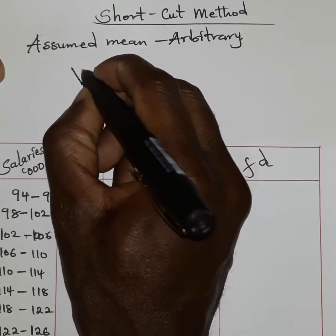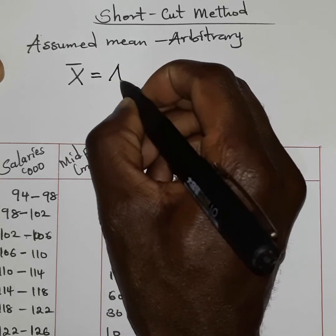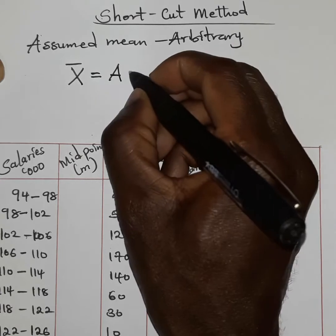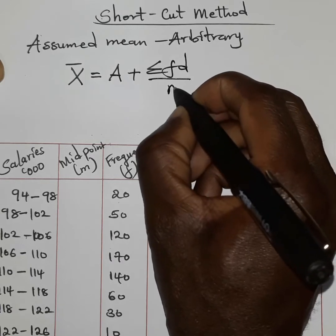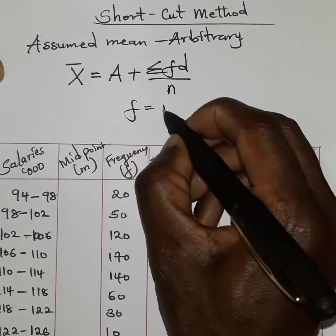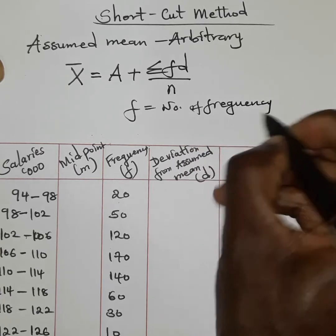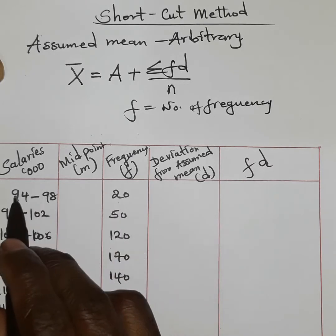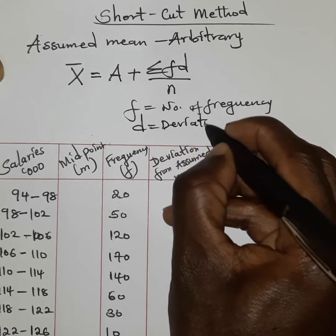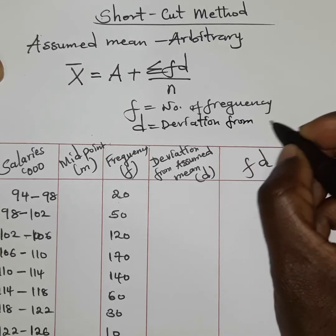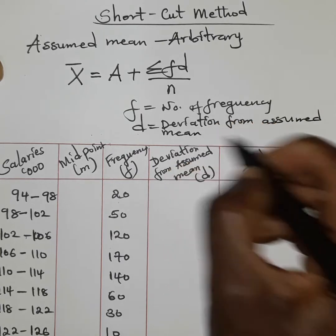To get the mean, which is normally x̄, we use this formula: x̄ = A + Σfd / n, where A is the assumed mean, f refers to the frequency (for example, 20 in the group 94 to 98), and d refers to the deviation from the assumed mean.